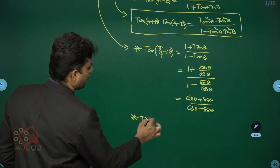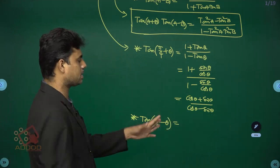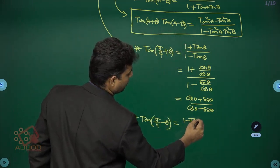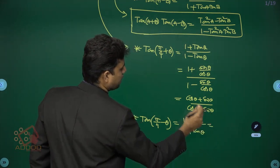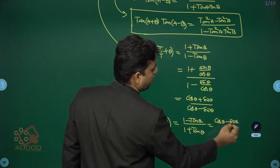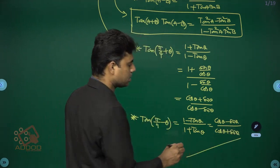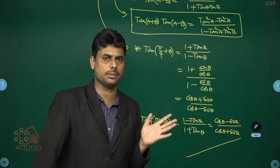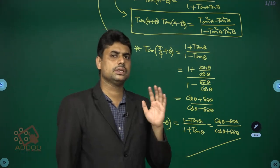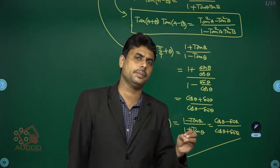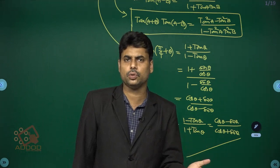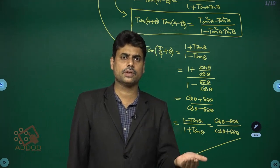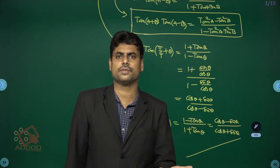Similarly, tan(π/4 - θ) is the reciprocal: (1 - tan θ)/(1 + tan θ), which simplifies to (cos θ - sin θ)/(cos θ + sin θ). These are important formulas useful for solving questions in this worksheet.